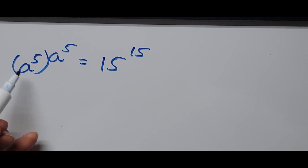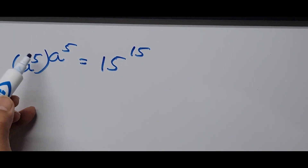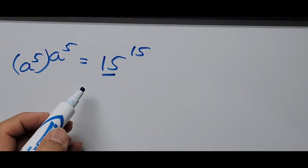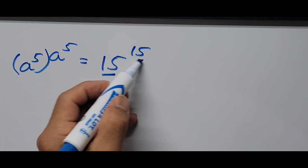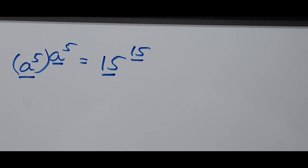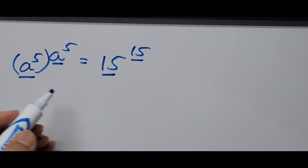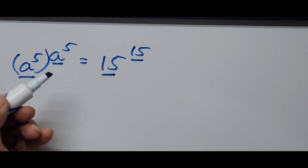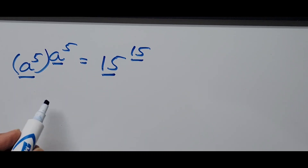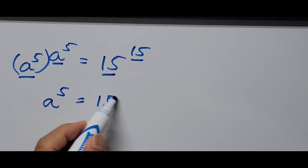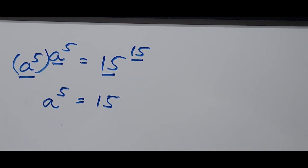We are now reading the equation as a raised to the fifth power raised to a raised to the fifth power equals 15 raised to the 15th power. Notice that on the left side, the base is a to the fifth power and the exponent is also a to the fifth power — they are the same. On the right side, the base is 15 and the exponent is 15 — also the same. Since the base equals the exponent on both sides, we can conclude that a raised to the fifth power equals 15.